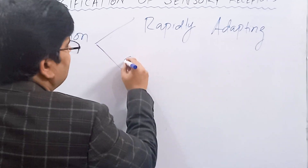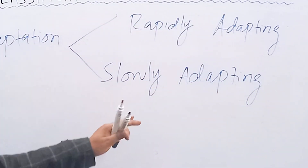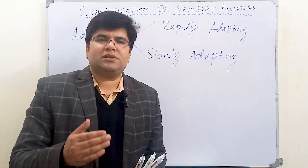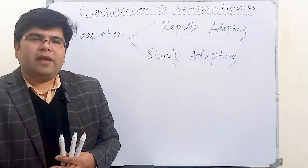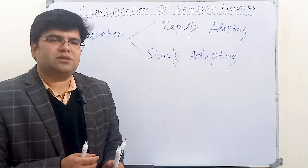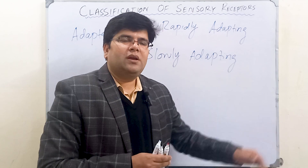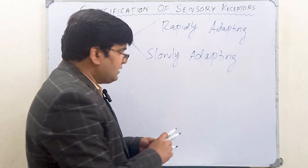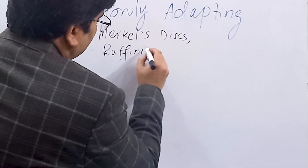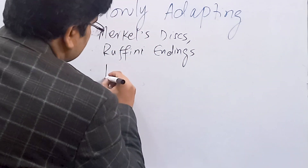The other type in this criterion is slowly adapting receptors, which are more common than rapidly adapting receptors. When given a stimulus, they initially show a receptor potential and firing of action potentials. With the passage of time, the receptor potential slightly decreases but remains sustained — they may keep on firing for hours or even days. Examples of slowly adapting receptors are Merkel's discs and Ruffini endings, both present in our skin.